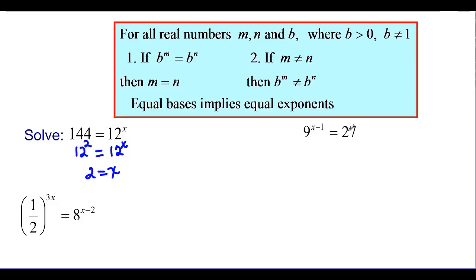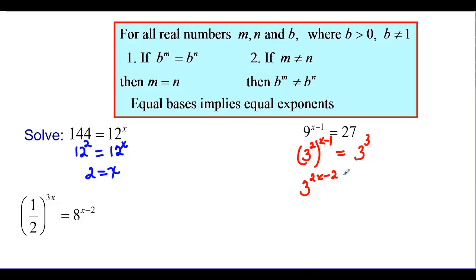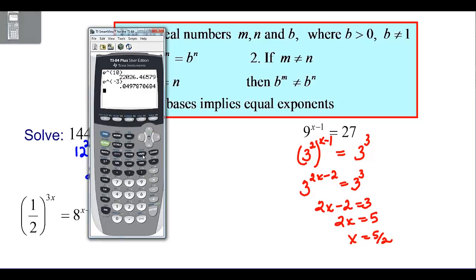Looking at 9 to the (x minus 1) equals 27: I can't use base 9 for 27, but 3 squared is 9 and 3 cubed is 27. So I rewrite 9 as 3 squared, still raised to the (x minus 1). Using the power rule to multiply exponents, I get 3 to the (2x minus 2) equals 3 to the 3. Setting the exponents equal: 2x minus 2 equals 3, so 2x equals 5, and x equals 5 over 2.